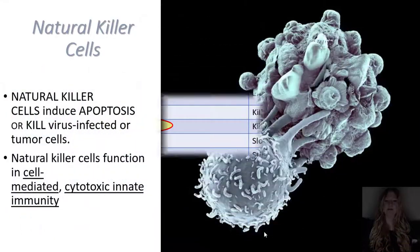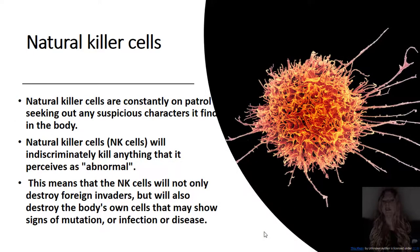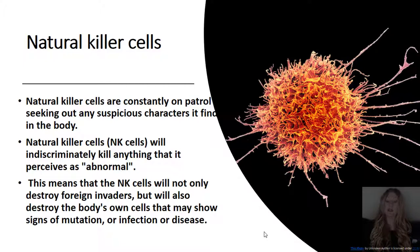Natural killer cells induce apoptosis, or kill virus-infected or tumor cells. Natural killer cells function in cell-mediated cytotoxic innate immunity. Natural killer cells are constantly on patrol, seeking out any suspicious characters within the body. Natural killer cells, sometimes abbreviated as NK cells, will indiscriminately kill anything that they may perceive as abnormal. This means that NK cells will not only destroy foreign invaders, but will also destroy the body's own cells that might show signs of mutation, infection, or disease.